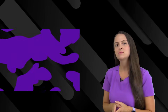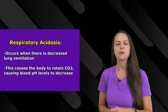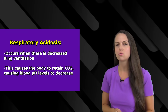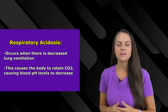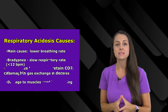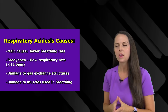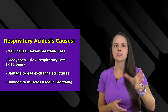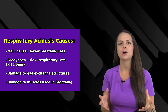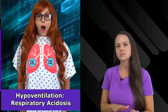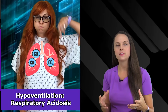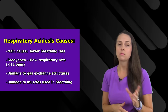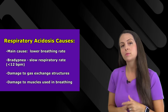This condition occurs because we have a decrease in lung ventilation, and whenever we have that, our body starts to retain CO2, carbon dioxide, which is going to drop our blood pH. Now, any conditions that lower our breathing rate — causing us to breathe too slow, like bradypnea — this is a respiratory rate less than 12 breaths per minute in an adult.